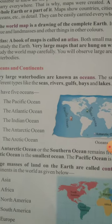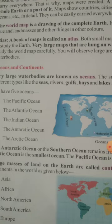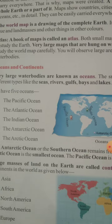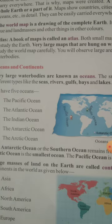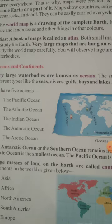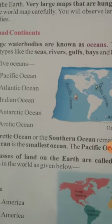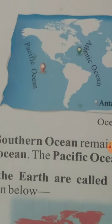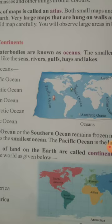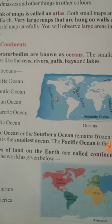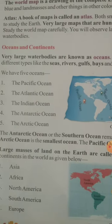The Antarctic Ocean, or the Southern Ocean, remains frozen most of the time. The Arctic Ocean is the smallest ocean. Sabse chota maha sagar Arctic Ocean hai. The Pacific Ocean is the largest ocean. Sabse bada maha sagar Pacific Ocean hai.